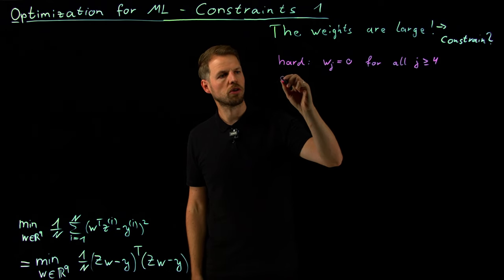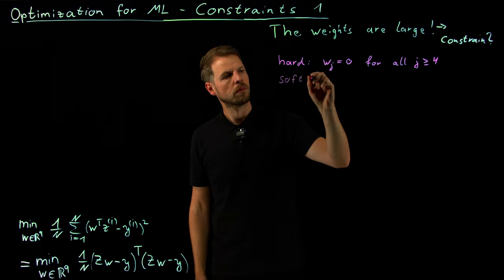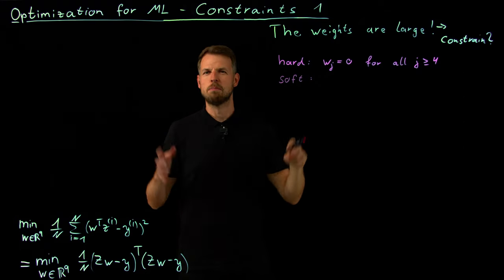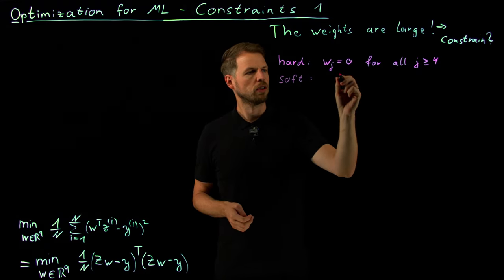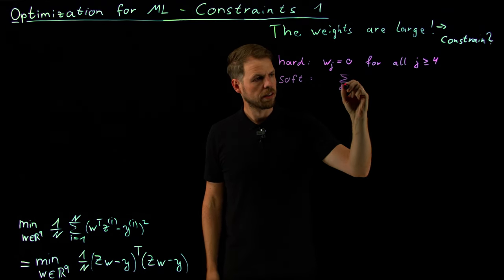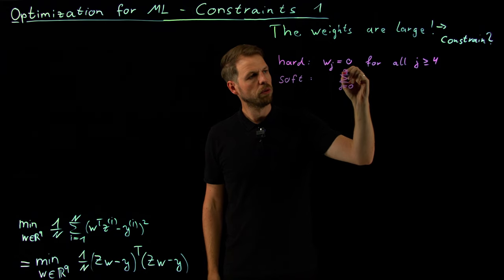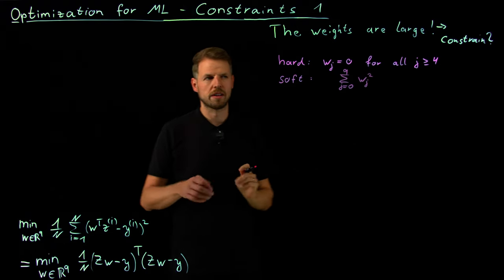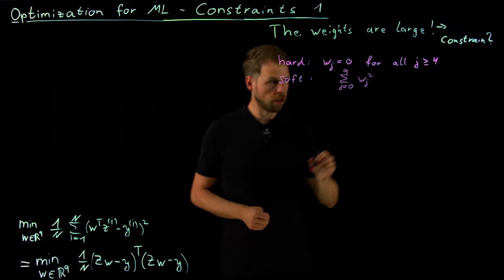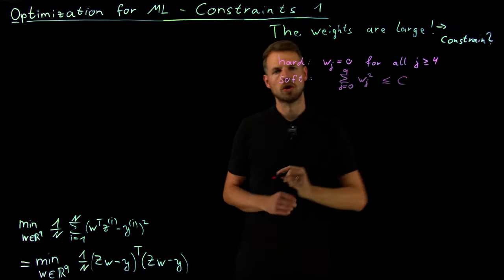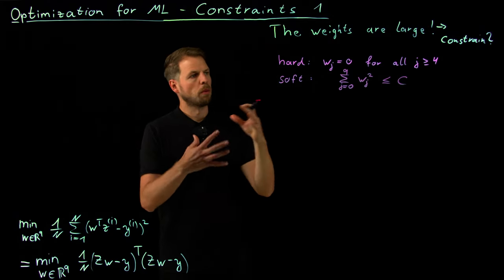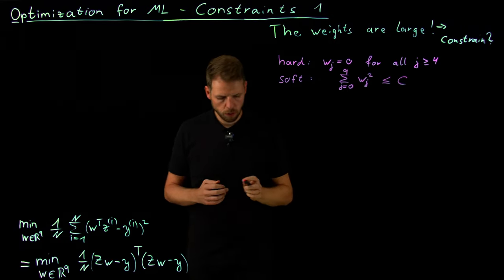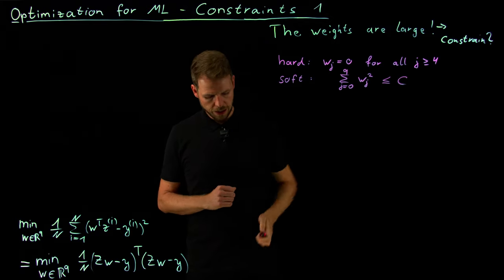So what you can also do is a more soft version of this. Let's not constrain each individual degree or forbid higher order degrees. Let's put a budget on the entire thing. So what you could say is the sum starting at zero until the degree q is constrained, or the squared sum. So the two norm of the weight vector or the square two norm, and we put a budget on this that we're going to call C. We're saying pick any weight you want, but the overall budget should not exceed C or the squared budget. And so what you see here is that this is essentially a constraint.